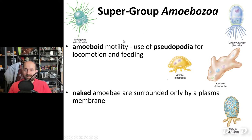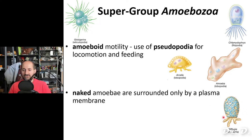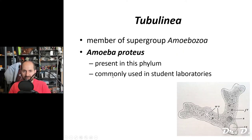Moving on from Excavata to Amoebozoa. Amoeba are organisms that can change their plasma membrane around with pseudopods — they exhibit pseudopodia for locomotion and feeding. They can be naked like the typical amoeba, or they can have a shell of silica. Amoeba proteus is probably the best-studied amoeba — the typical canonical amoeba studied in labs — belonging to the Tubulina group.